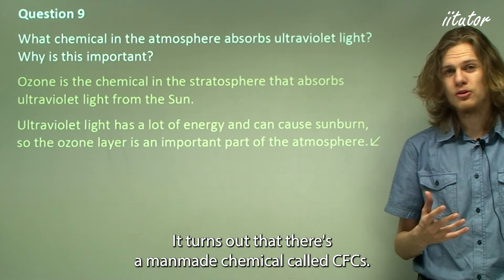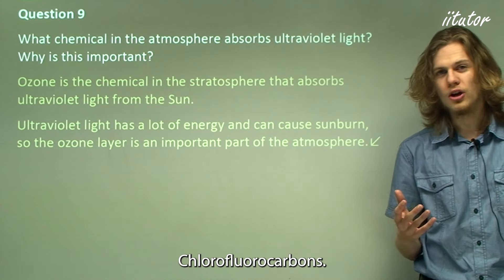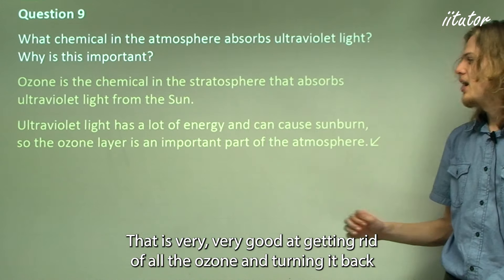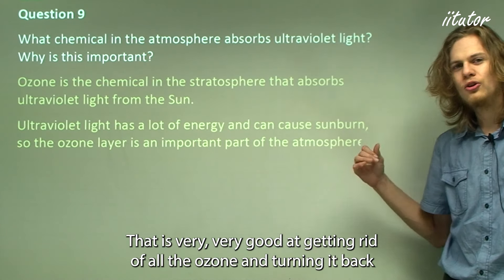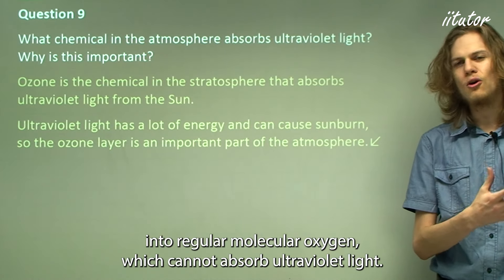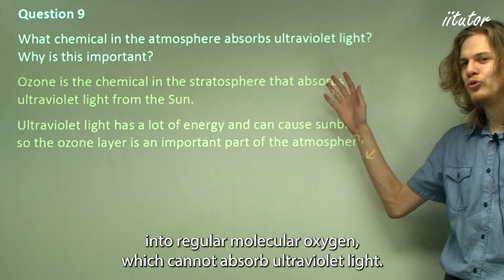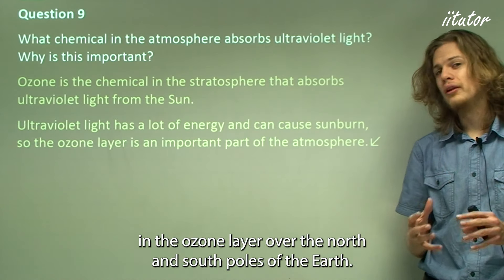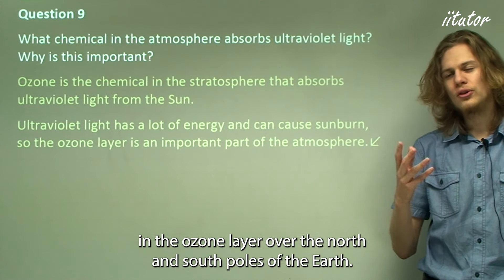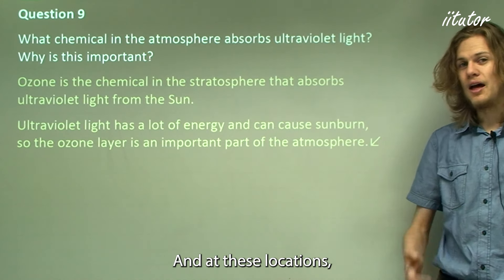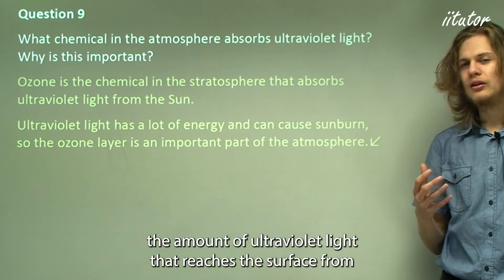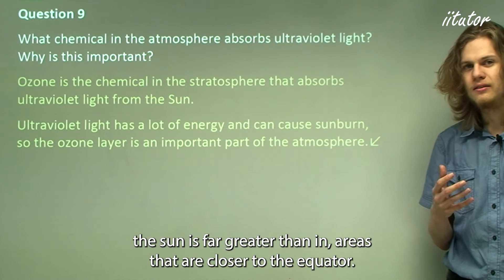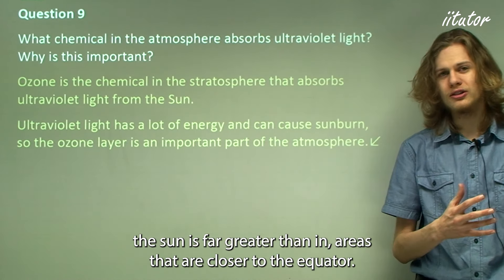It turns out that a man-made chemical called CFCs — chlorofluorocarbons — is very effective at converting ozone back into regular molecular oxygen, which cannot absorb ultraviolet light. As a result, there is a very large hole in the ozone layer over the north and south poles of the Earth. At these locations, the amount of ultraviolet light reaching the surface from the sun is far greater than in areas closer to the equator.